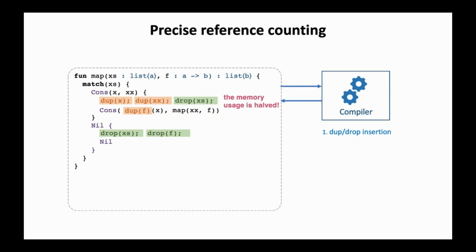More importantly, transferring ownership means we can free an object immediately where no more references remain. For map, the memory usage is halved. The list XS is deallocated while the new list is being allocated. Once we change to Perceus ownership-based reference counting, there are many optimization opportunities.